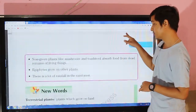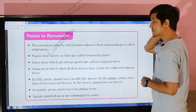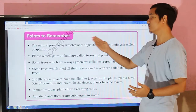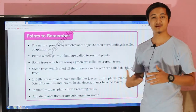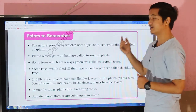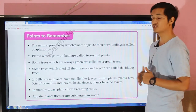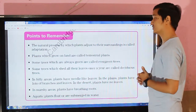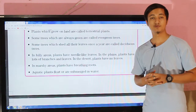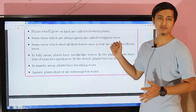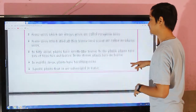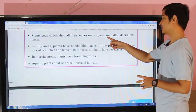Points to remember: Point number one — the natural process by which plants adjust to their surroundings is called adaptation. Plants which grow on land are called terrestrial plants. Some trees which are always green and never shed all their leaves at once are called evergreen trees.